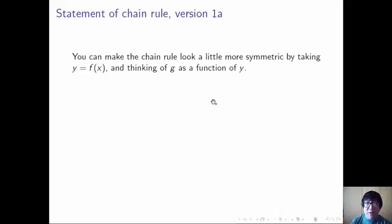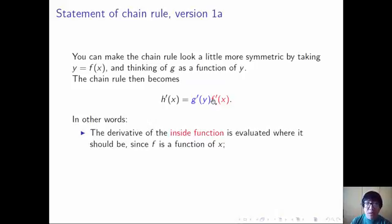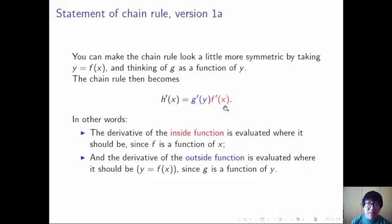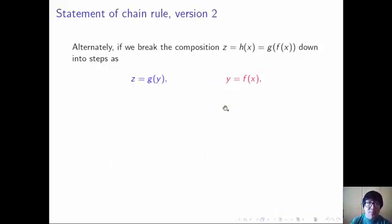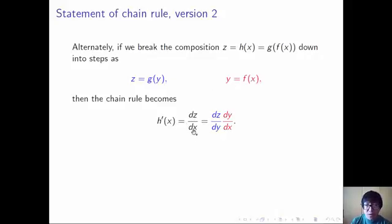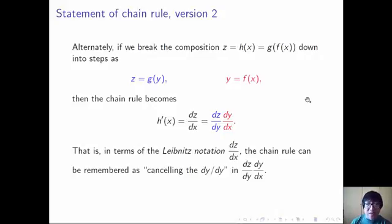Well, you can make it look a little more symmetric by taking y equals f of x and thinking of g as a function of y. So instead of writing g of x, you write g of y — variables don't know their own names. In that case, the chain rule becomes h prime of x equals g prime of y times f prime of x. The derivative of the inside function is evaluated where it should be, since f is a function of x, and the derivative of the outside function is evaluated where it should be at y, since g is a function of y. So that leads us to the second version of the chain rule. If you break the composition down into two steps — z equals g of y and y equals f of x — the chain rule becomes dz/dx equals dz/dy times dy/dx. In terms of the Leibniz notation, you can think of it as cancelling the dy in dz/dy times dy/dx.